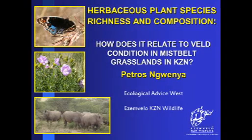Within the conservation sector, questions are often asked as to what veld condition actually tells us about biodiversity of a particular area. This study is trying to provide answers to some of these questions. If I were to go into a particular area and conduct a veld condition assessment and get scores saying the area is in good veld condition, does that perhaps mean that area is also high in species richness or species diversity? What if the condition was actually poor?